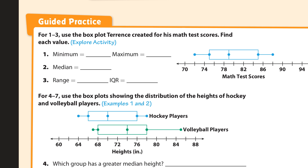Our maximum value is the other side, the other whisker, which is right here. That looks like if that's 86 and that's 90, that would be 88, so 88 is our maximum, our largest value.